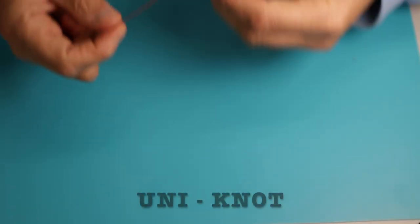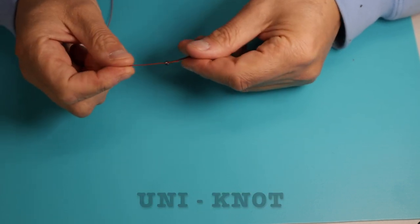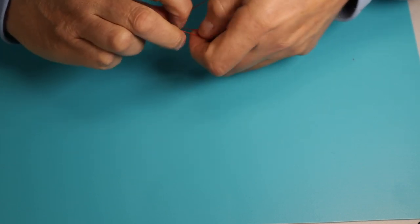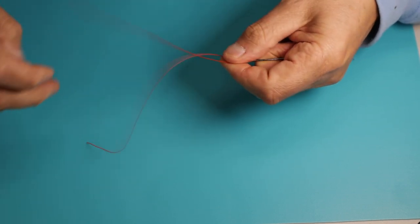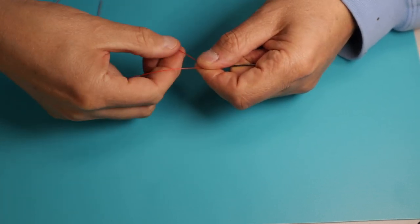The uni knot starts with the tag end of your line passed through the eye of the hook.